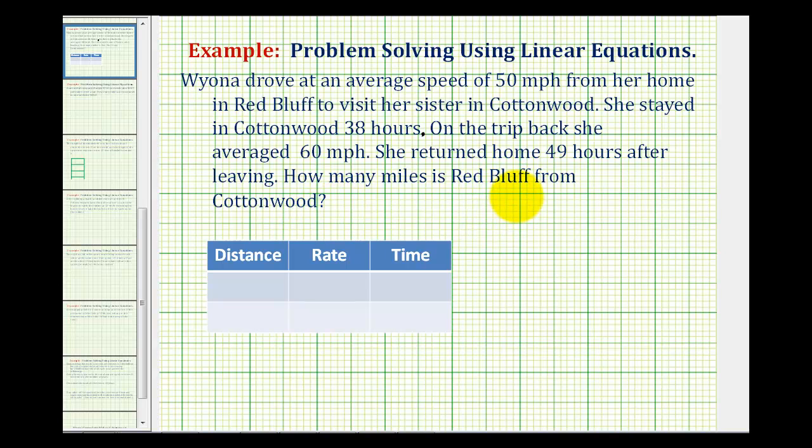So this problem deals with the formula distance equals rate times time. Notice how I set up a table to record all the information that we need. We know that the distance is going to be equal to the rate times the time. We'll complete this table for the trip to Cottonwood and then also for the return trip.